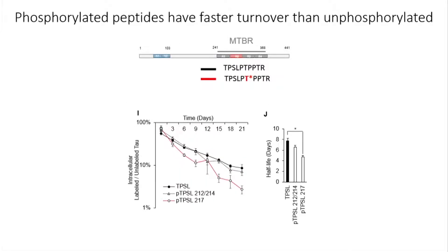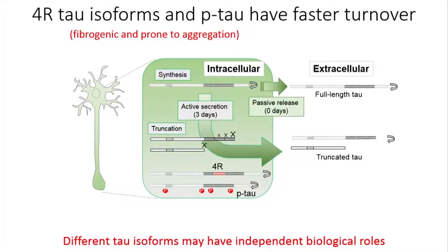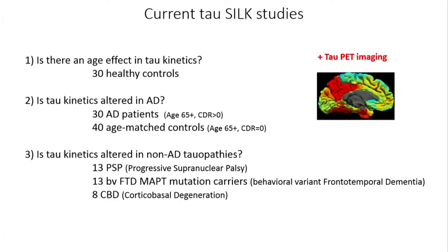4R tau has a shorter half-life than 3R tau — and since 4R is more associated with aggregation, the difference in kinetics could explain the different behavior. Assessing the impact of phosphorylation on kinetics: a peptide with no phosphorylation compared with peptides phosphorylated at T217 or T214 — we can see the impact of phosphate location on tau kinetics.